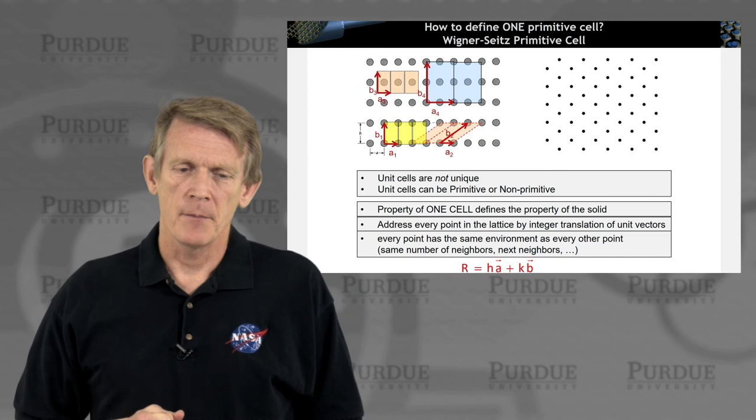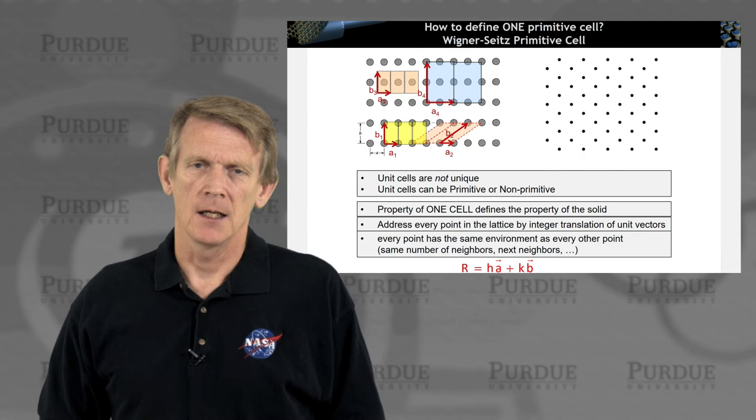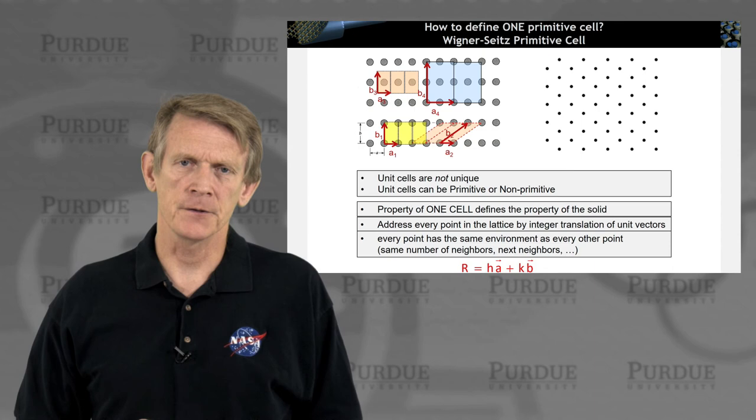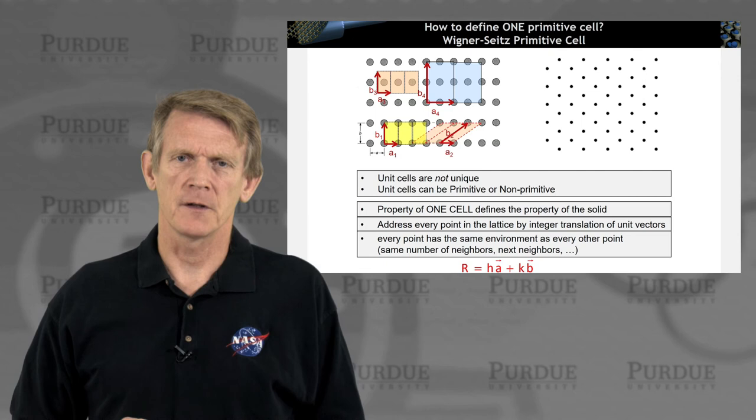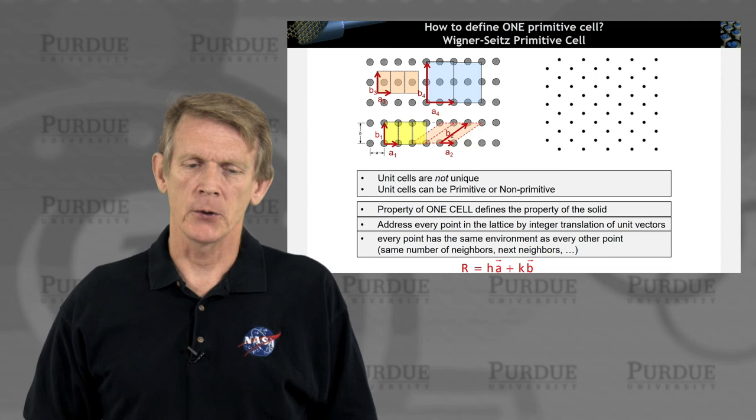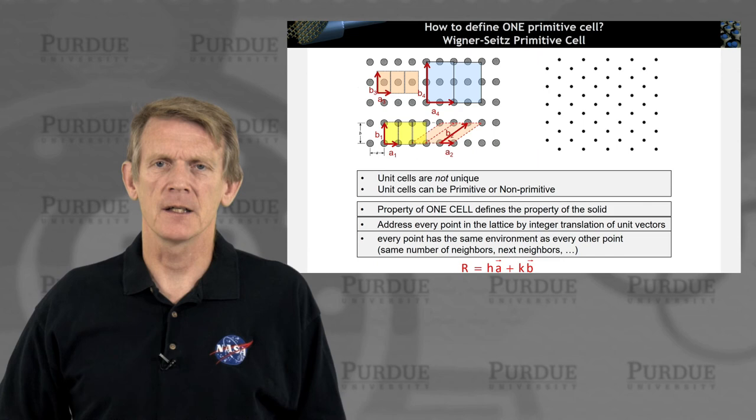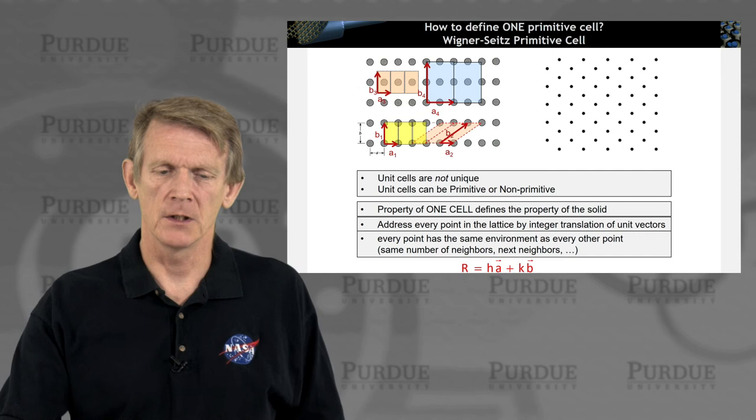All right. So, as I mentioned, we have the issue that we want to define unit cells, and we can, even in the simple 2D example, we can draw a bunch of different unit cells, and obviously your creativity has no limits to define different unit cells that could be getting complex and rather large. The point is, can you find a way to have a recipe to define a single unique primitive cell?